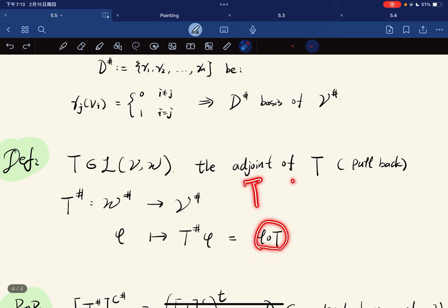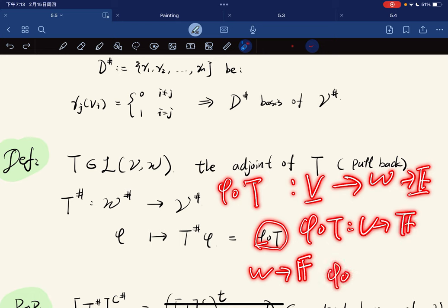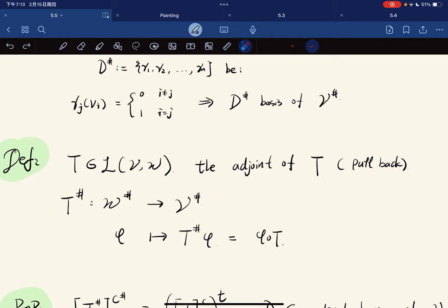How do we analyze φ ∘ T? T goes from V to W, and φ goes from W to F, so it goes to F. φ ∘ T goes from V to F, which means φ ∘ T belongs to the functionals on V, which is as desired.